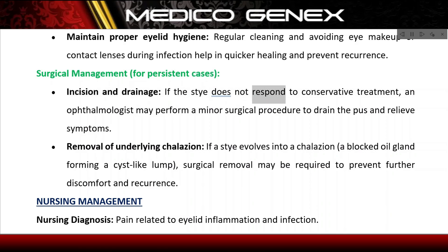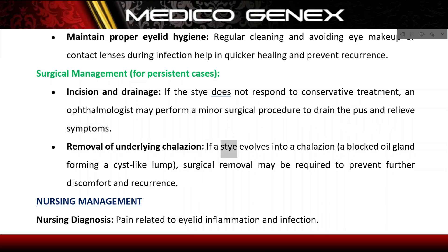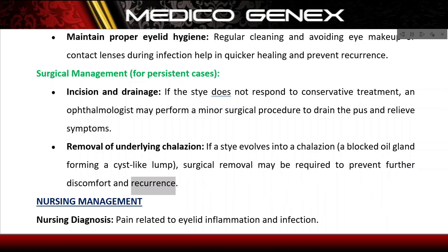Surgical management is considered for persistent cases. If the stye does not respond to conservative treatment, an ophthalmologist may perform a minor surgical procedure — incision and drainage — to drain the pus and relieve symptoms. If a stye evolves into a chalazion, a blocked oil gland forming a cyst-like lump, surgical removal may be required to prevent further discomfort and recurrence.